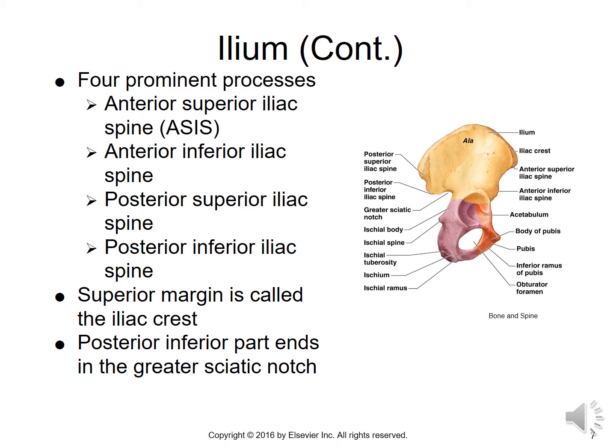The ilium has four prominent processes. You've got the anterior superior iliac spine — identify that on the right side of the drawing. Below that is the anterior inferior iliac spine, or AIIS, a bony process that is not palpable. At the back of the bone is the posterior superior iliac spine, or PSIS, and below that the posterior inferior iliac spine, or PIIS. The superior margin of the ilium is termed the iliac crest, and the posterior inferior part ends in what is termed the greater sciatic notch.